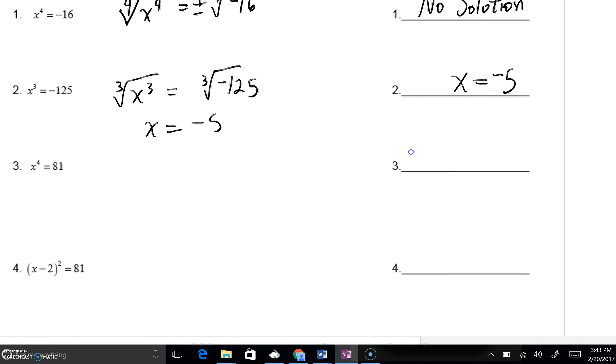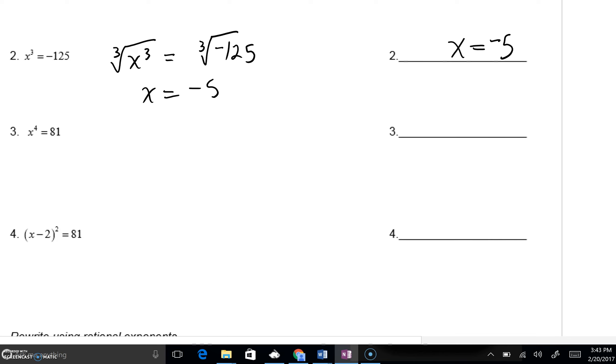Let's take a look at number 3. x to the 4th equals 81. Much like the problem that we did for number 1, we need to take a 4th root to get rid of that 4th power.